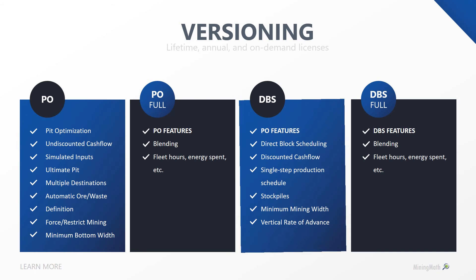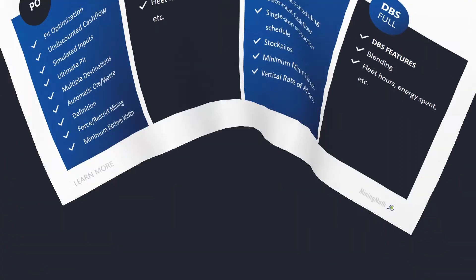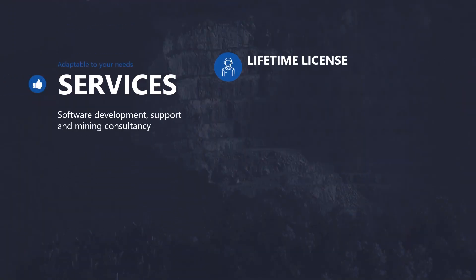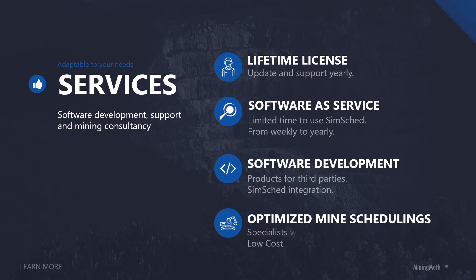SimSched DBS Core delivers an optimized mine schedule straight from the block model while respecting mining constraints. Additional constraints like blending, equipment hours, production by rock type, consumption of processing inputs, and metal production are available in SimSched DBS Full. We also offer SimSched Pit Optimizer, a simplified version that runs pit optimization respecting minimum bottom widths, and SimSched Pit Optimizer Full, which also allows blending and other constraints. We provide lifetime, annual, and on-demand licensing, as well as services in mine scheduling optimization including software development and integration.